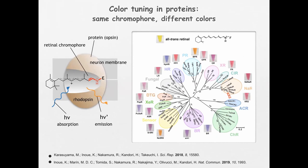Rhodopsins are proteins made basically by a protein part which has a cavity, and inside the cavity there is a chromophore — a molecule which is able to catch light. This chromophore is always the same within the family; the only thing that changes is the protein sequence, the amino acid composition. In spite of that, you can get so many different colors.